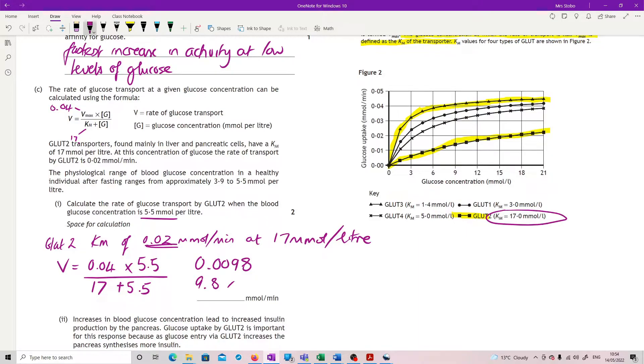or your calculator might give it, or you might want to give it in scientific notation as 9.8 times 10 to the minus 3. I thought that was a sneaky question. You had to really read it very carefully.